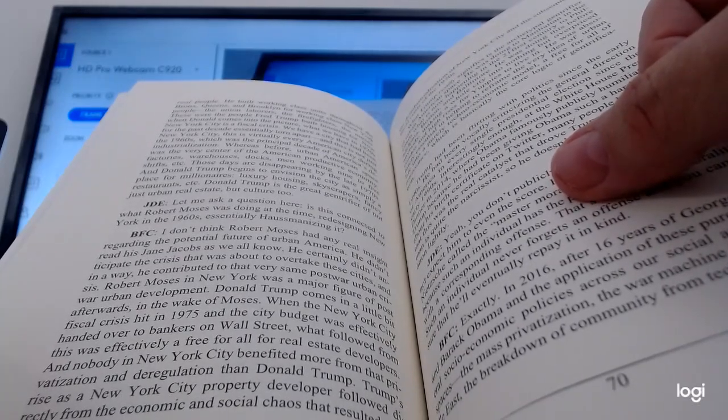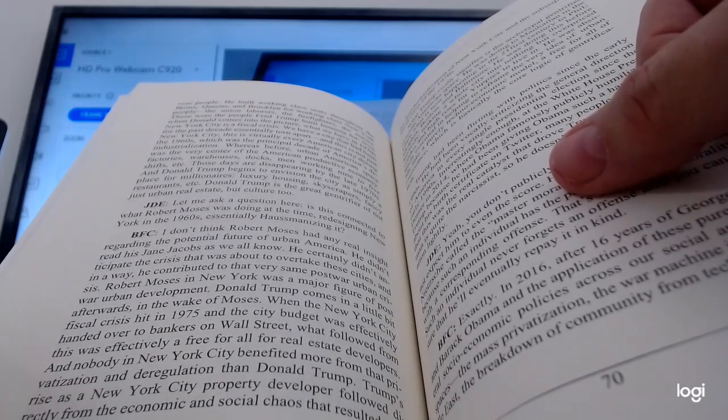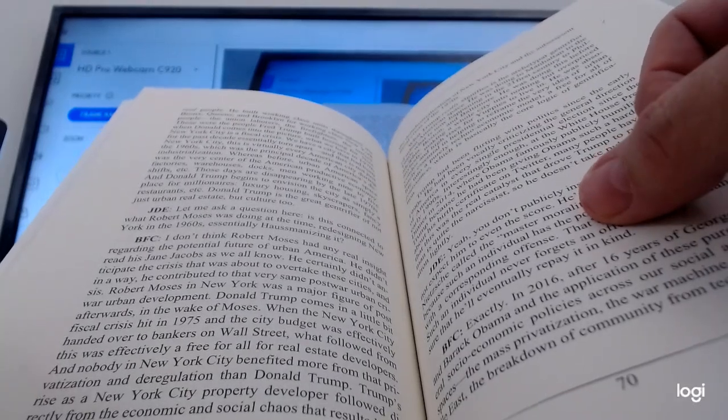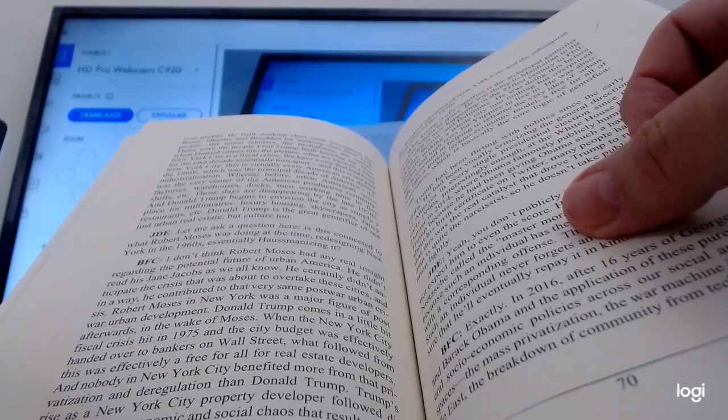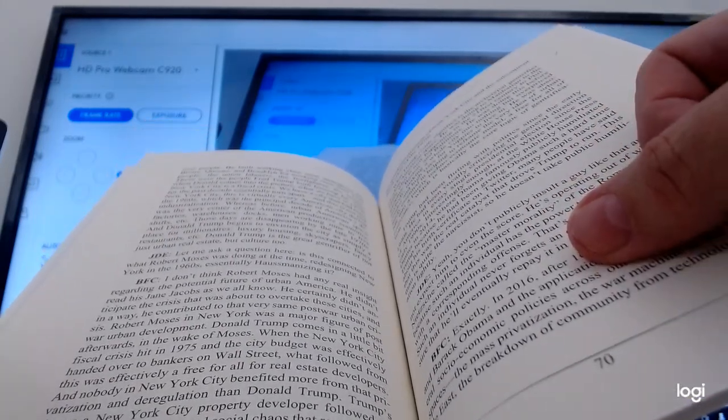Whereas before, urban American space was the very center of the American productive economy—factories, warehouses, docks, men working nine-to-five shifts—those days are disappearing by the late 70s. And Donald Trump begins to envision the city as simply a place for millionaires, luxury housing, skyscrapers, fancy restaurants. Donald Trump is the great gentrifier of not just urban real estate but culture too. Ebert, let me ask a question here. Is this connected to what Robert Moses was doing at the time, redesigning New York in the 60s, essentially Haussmannizing it?